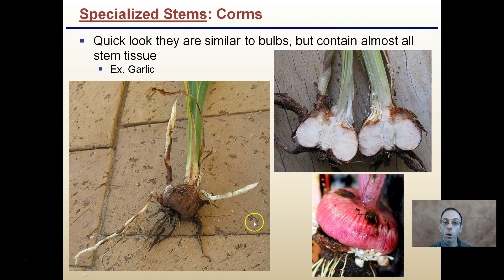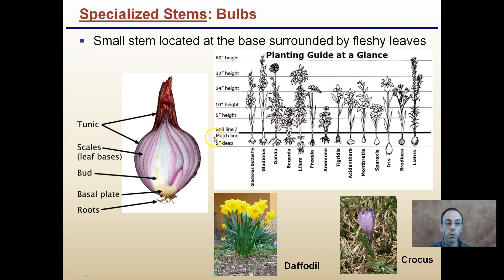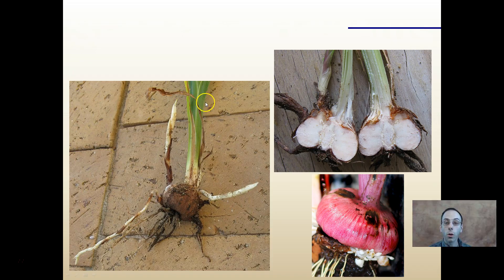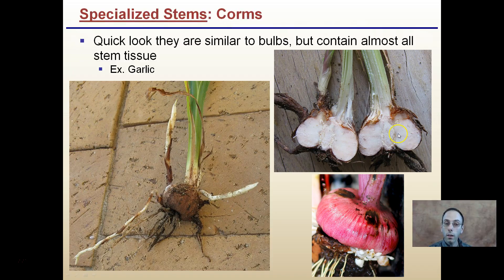The last type is called a corm. On a quick look they look very similar to bulbs, but they contain almost all stem tissue. To go back for comparison, bulbs are small stems located inside a base surrounded by fleshy leaves — kind of all these leaves if we take the cross section of a bulb. If we do that same cross section with a corm, we notice that while the exterior looks like bulbs, they contain almost all stem tissue.